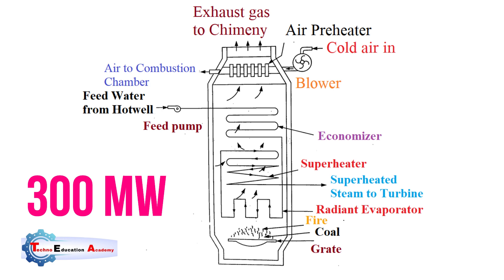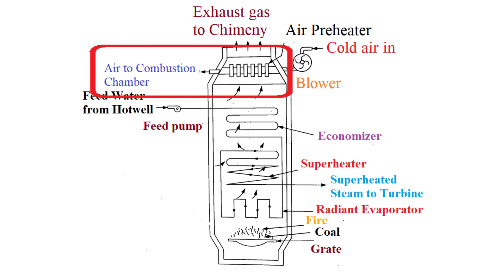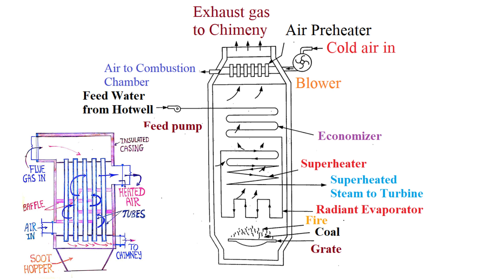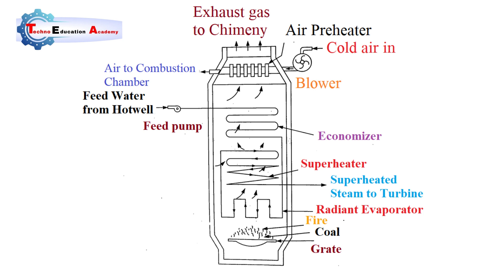Usually power plants having a capacity of 300 megawatts and above use supercritical boilers. We also use an air preheater to increase combustion efficiency. Air enters the preheater and receives heat from the flue gases — whatever energy is available before passing to the chimney — to increase the temperature of the air, which is then supplied to the combustion chamber, again increasing combustion efficiency. This is an accessory of the boiler. This is the overall working principle of the supercritical boiler.